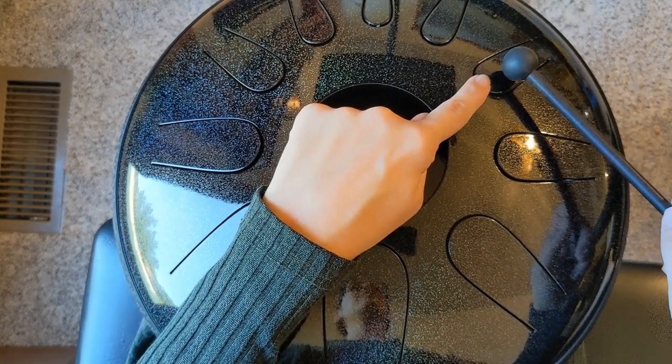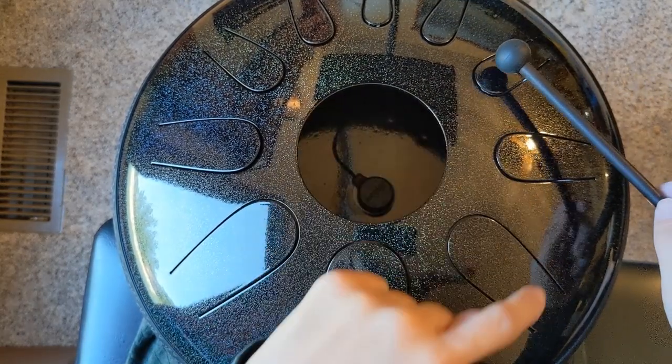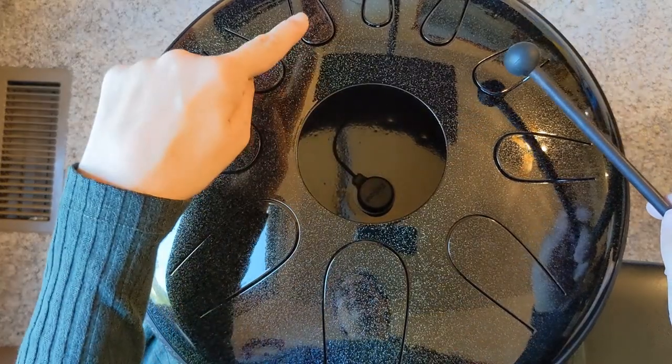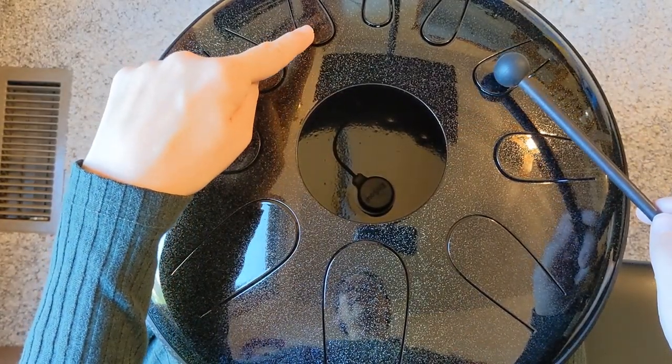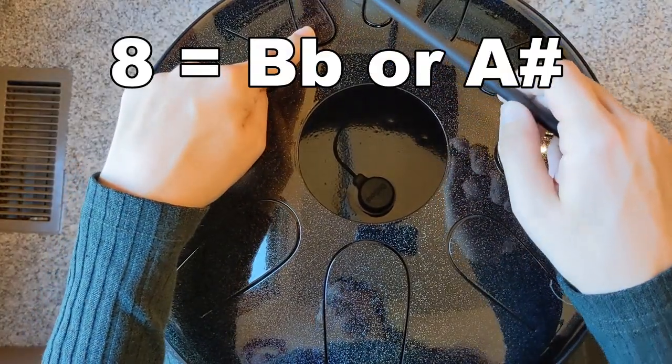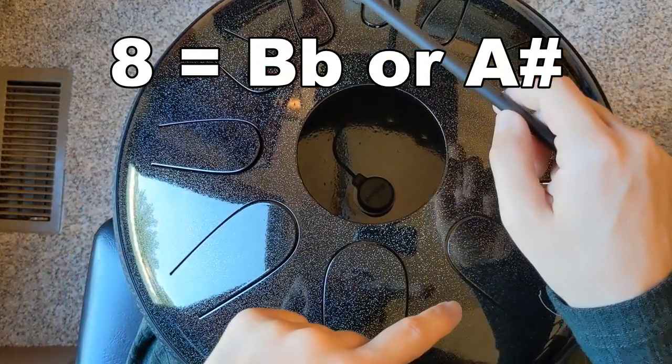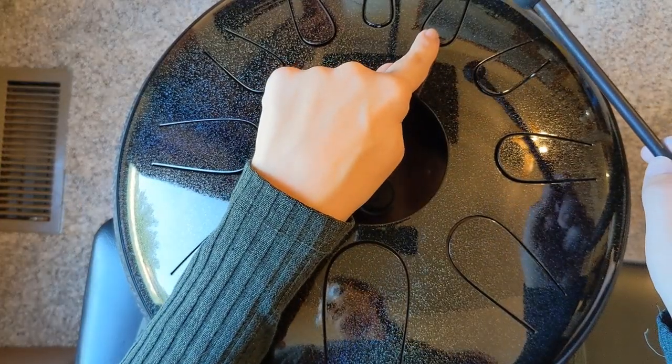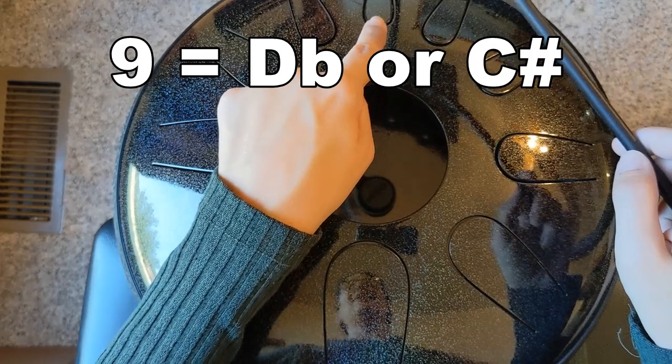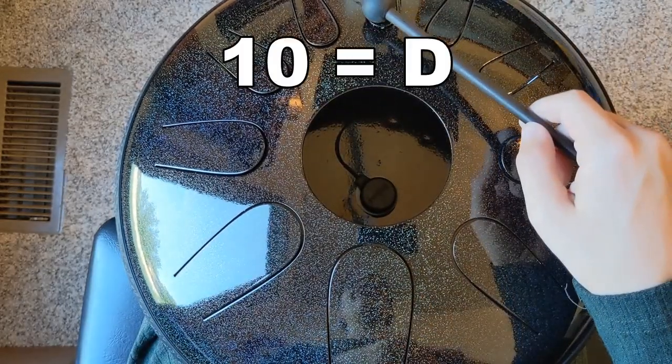And tongue number seven, we resolve to tonic, it's a G. And then kind of repeating our earlier pattern. Tongue number eight is gonna be a B flat. Tongue number nine is a D flat. And tongue number ten is again a D.